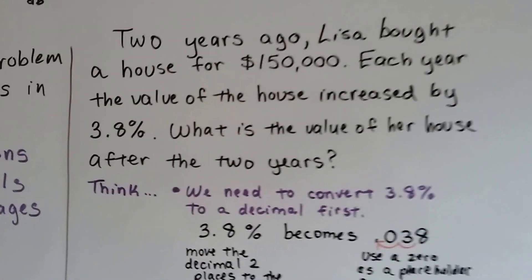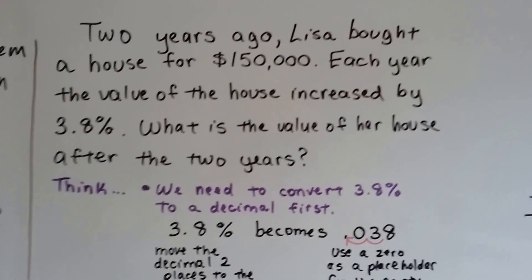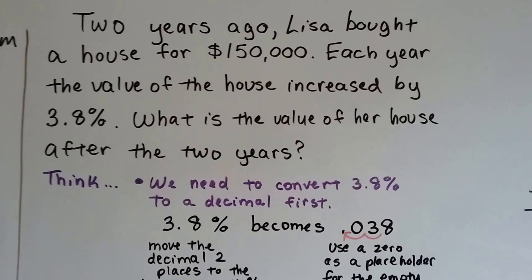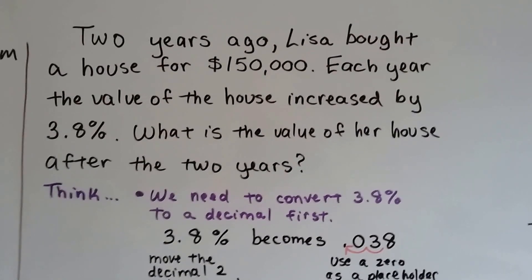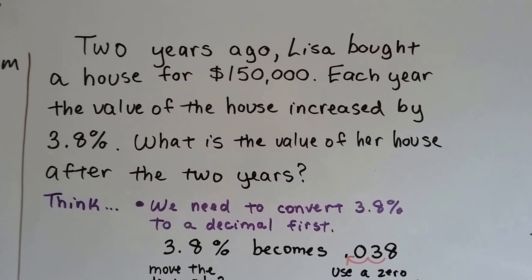So we're going to do a word problem that has several steps to it. Two years ago Lisa bought a house for $150,000, and each year the value of the house increased by 3.8%. What is the value of her house after two years?